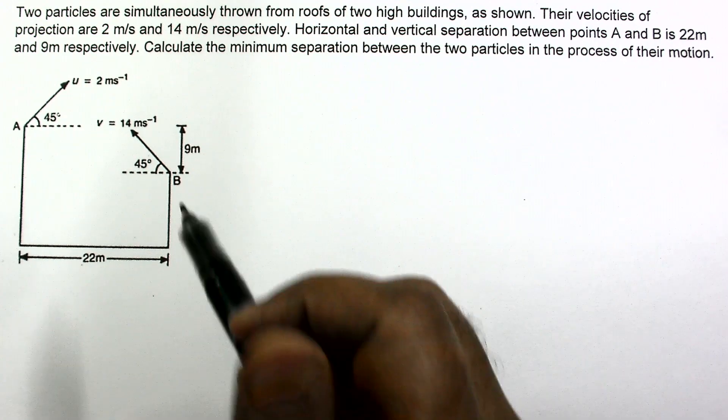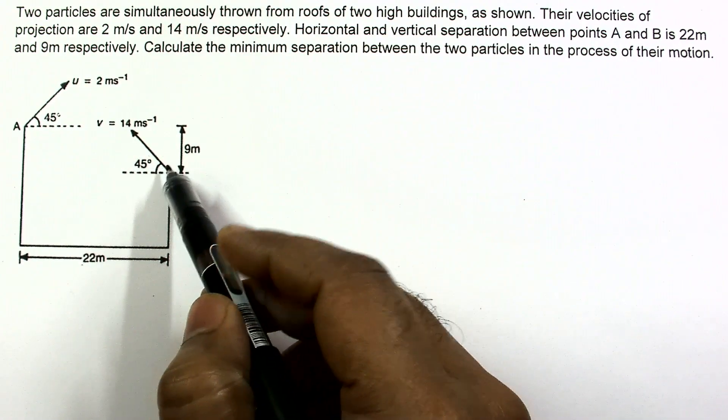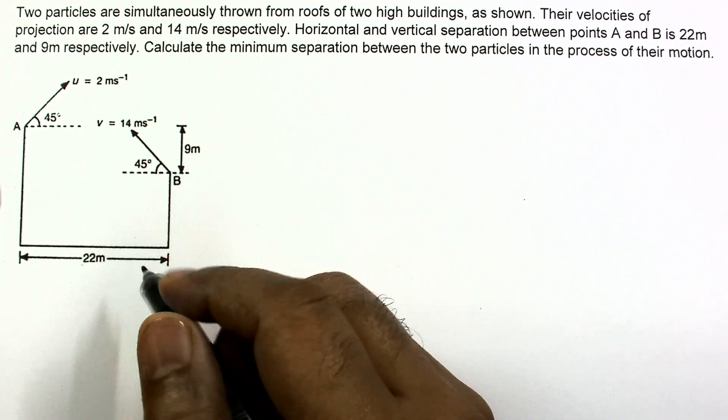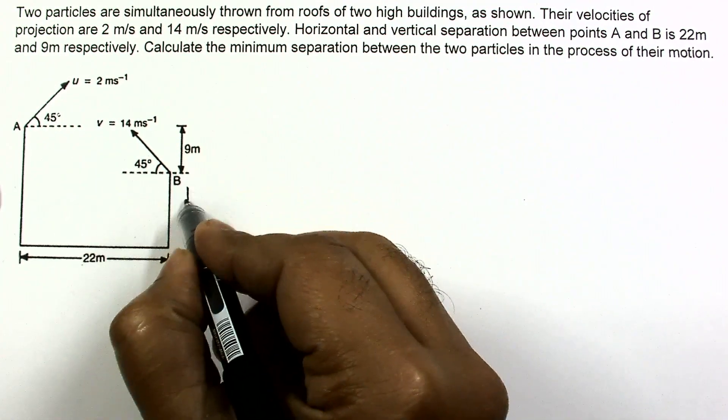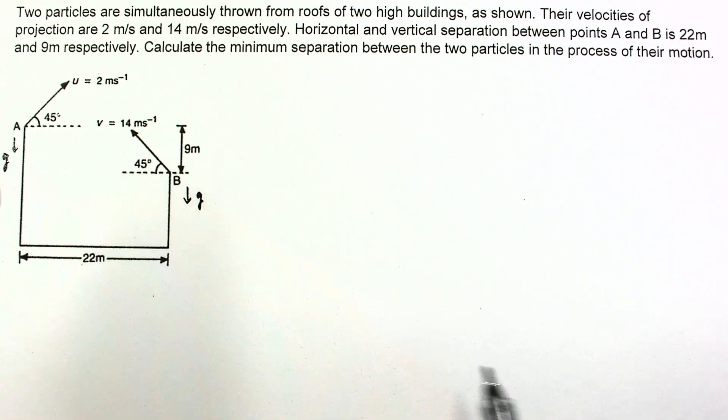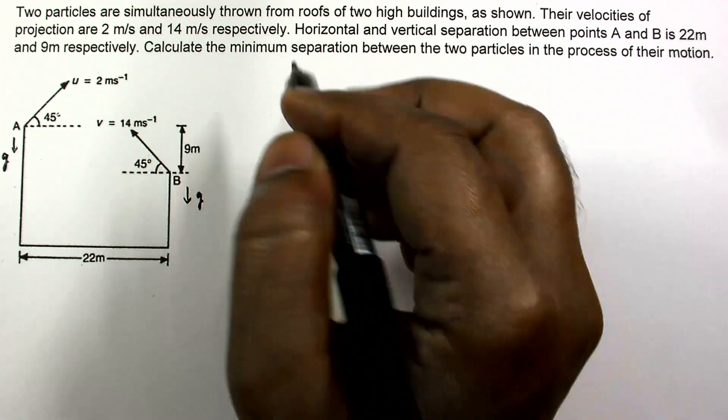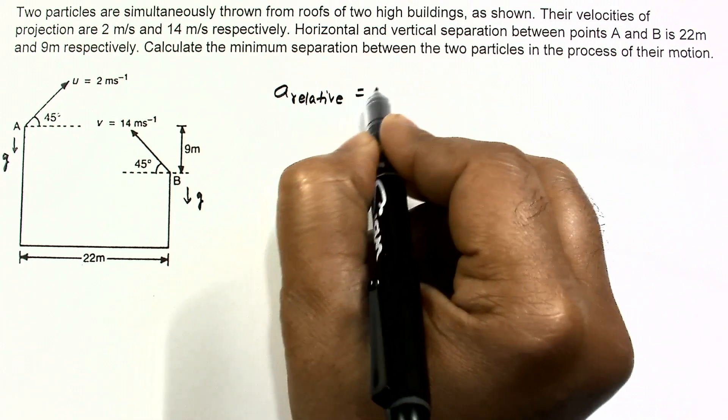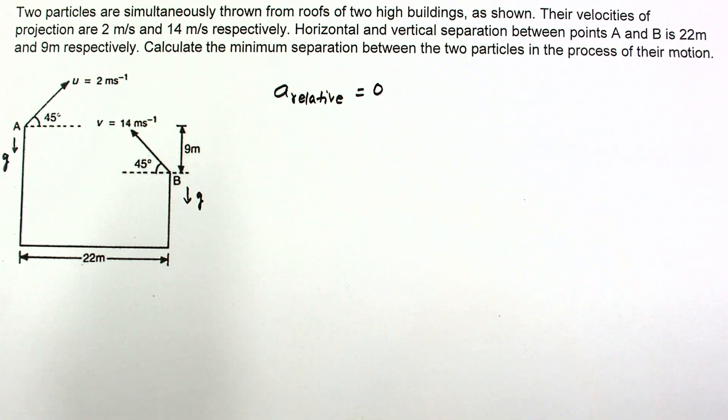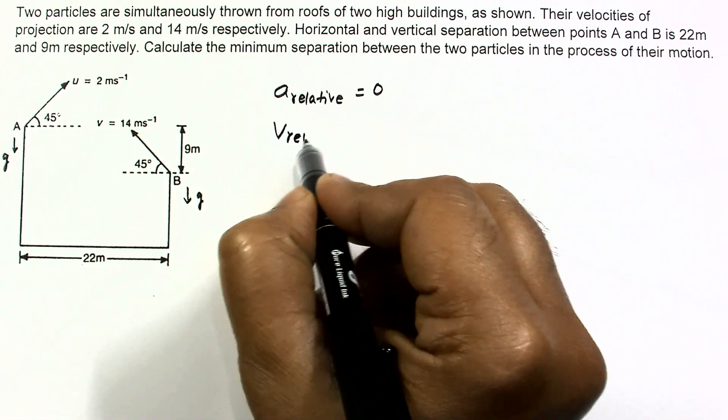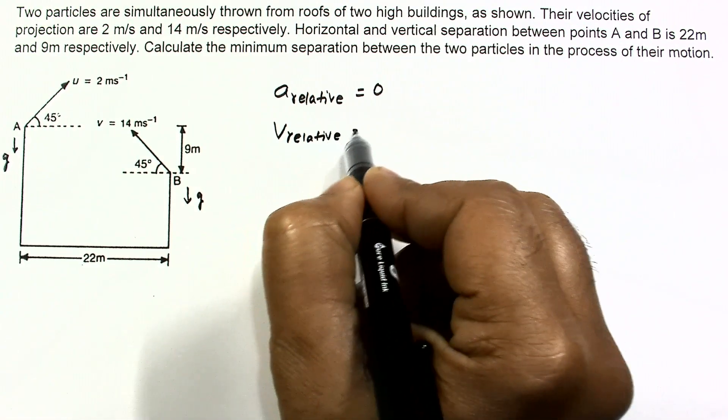Both particles are thrown under gravity. The only acceleration of A and B will be g downwards. Since their accelerations are equal, so a_relative is 0. There is no relative acceleration. And since a_relative is 0, v_relative is constant.